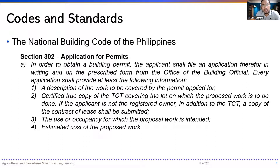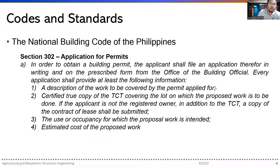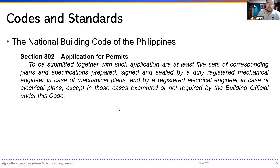The agricultural and biosystems engineer is limited to agricultural lands. There are different classifications of lands — from the alienable and disposable lands, they could be industrial, agricultural, or commercial — and the ABE has functional abilities in agricultural land specifications. The use or occupancy for which the proposal is intended is also required, along with the estimated cost of the proposed work. At least five sets of plans and specifications shall be submitted, prepared, signed, and sealed by a registered mechanical engineer for mechanical plans and a registered electrical engineer for electrical plans, except in cases exempted by the building official.